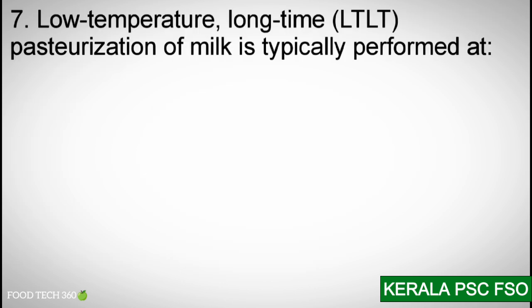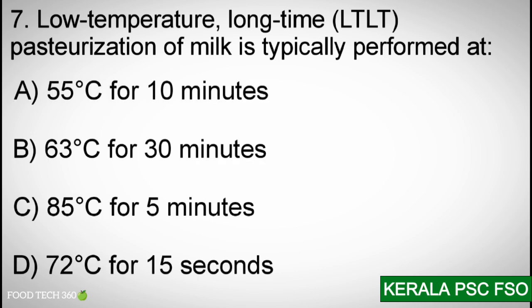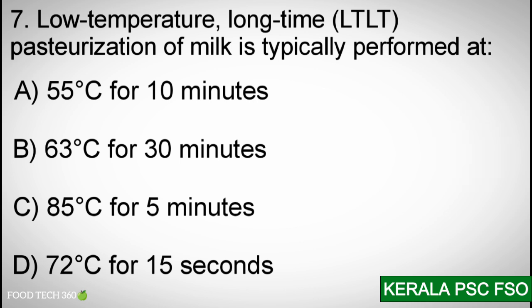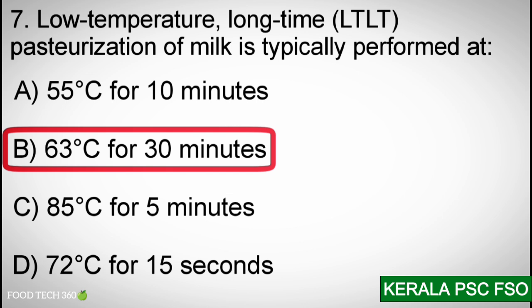Question number seven: Low Temperature Long Time (LTLT) pasteurization of milk is typically performed at which conditions? Options: A) 55°C for 10 minutes. B) 63°C for 30 minutes. C) 85°C for 5 minutes. D) 72°C for 15 seconds. Correct answer: B) 63°C for 30 minutes.